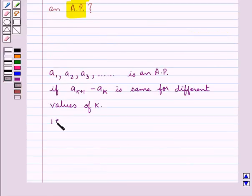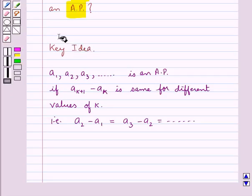That is, A2 minus A1 is equal to A3 minus A2 is equal to and so on. This is the key idea to be used in this question.